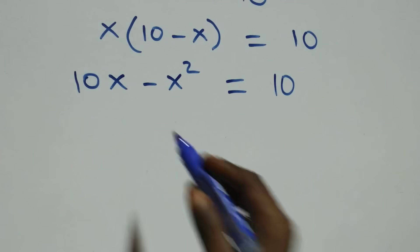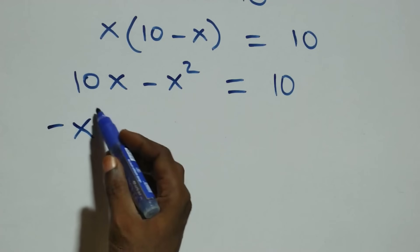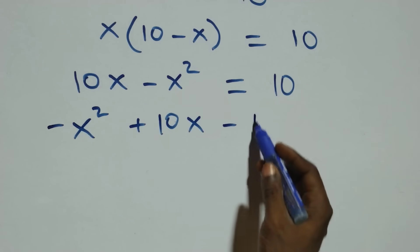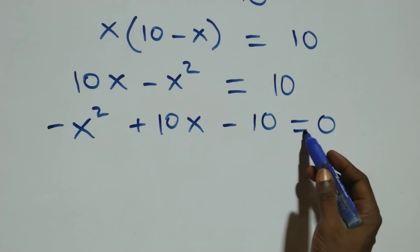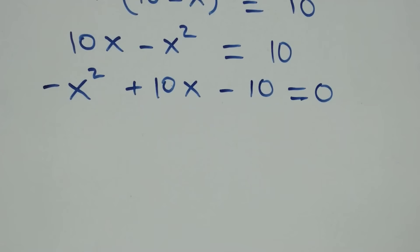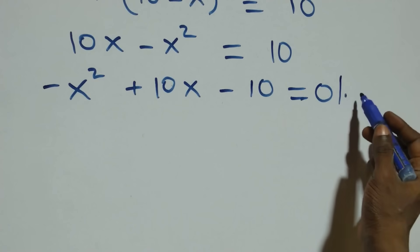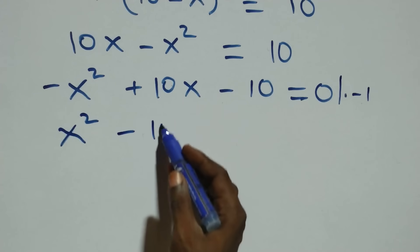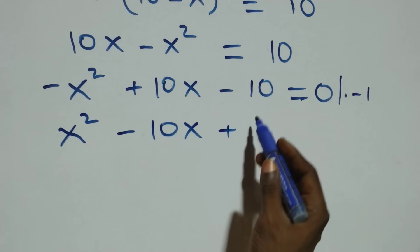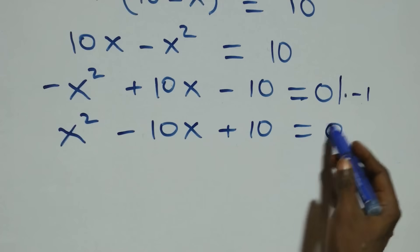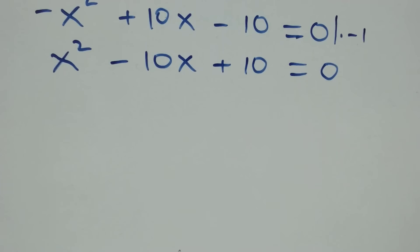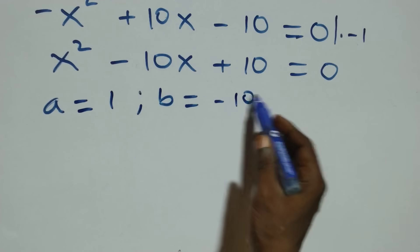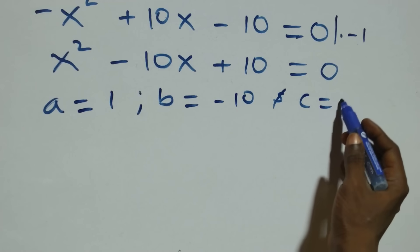We open the bracket: ten x minus x squared equals ten. Rearranging, we get minus x squared plus ten x minus ten equals zero. Multiplying through by minus one gives x squared minus ten x plus ten equals zero. This is a quadratic equation where a equals one, b equals minus ten, and c equals ten.